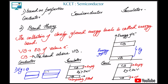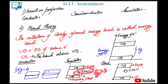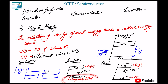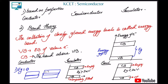For a conductor, the energy bands are either overlapping or just touching. For an insulator, there is a gap between the bands and the energy band gap is more than three electron volts, so electrons don't have enough energy to jump from the valence band to the conduction band. In an insulator, the valence band is completely filled and the conduction band is completely empty.